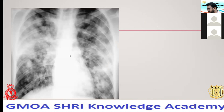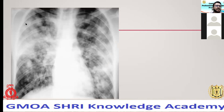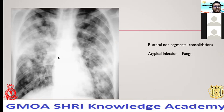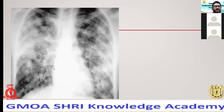Similar to the previous X-ray, but here the multiple opacities have irregular, spiculated outlines. This cannot be malignancy because it is involving both lungs similarly, which is very rare for malignancy. These ill-defined opacities are haphazardly distributed — this is atypical infection involving both lung fields, likely fungal infection or atypical pneumonia. Similar to the previous case but with irregular changes and airspace opacification — you would call it atypical pneumonia or a fungal infection.